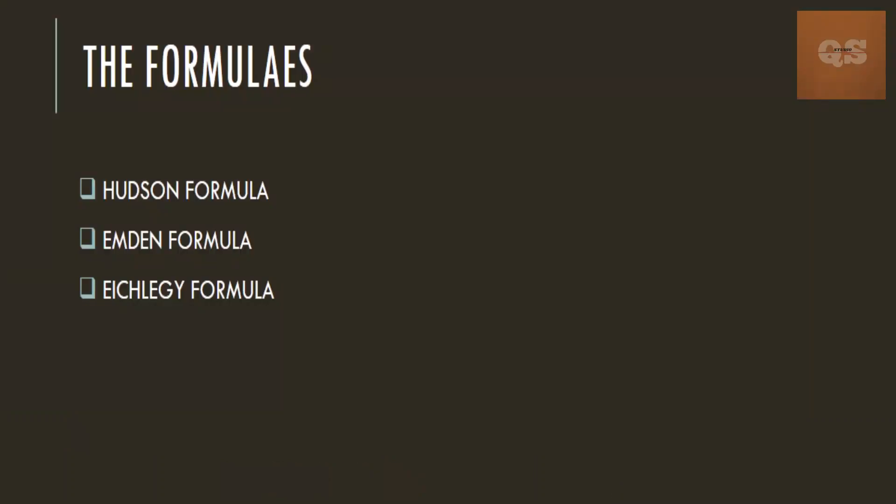These are the three formulas by which we can calculate our head office related costs once an extension of time has been granted: the Hudson formula, the Emden formula, and the Eichleay formula. Now let's look into each of these formulas.